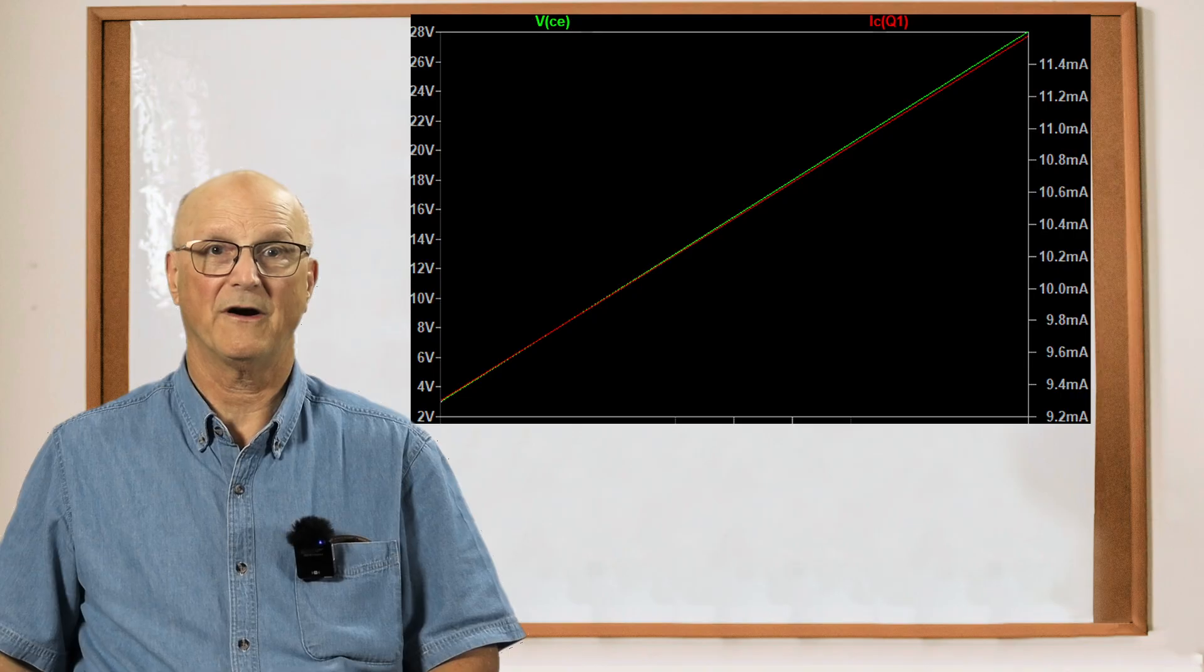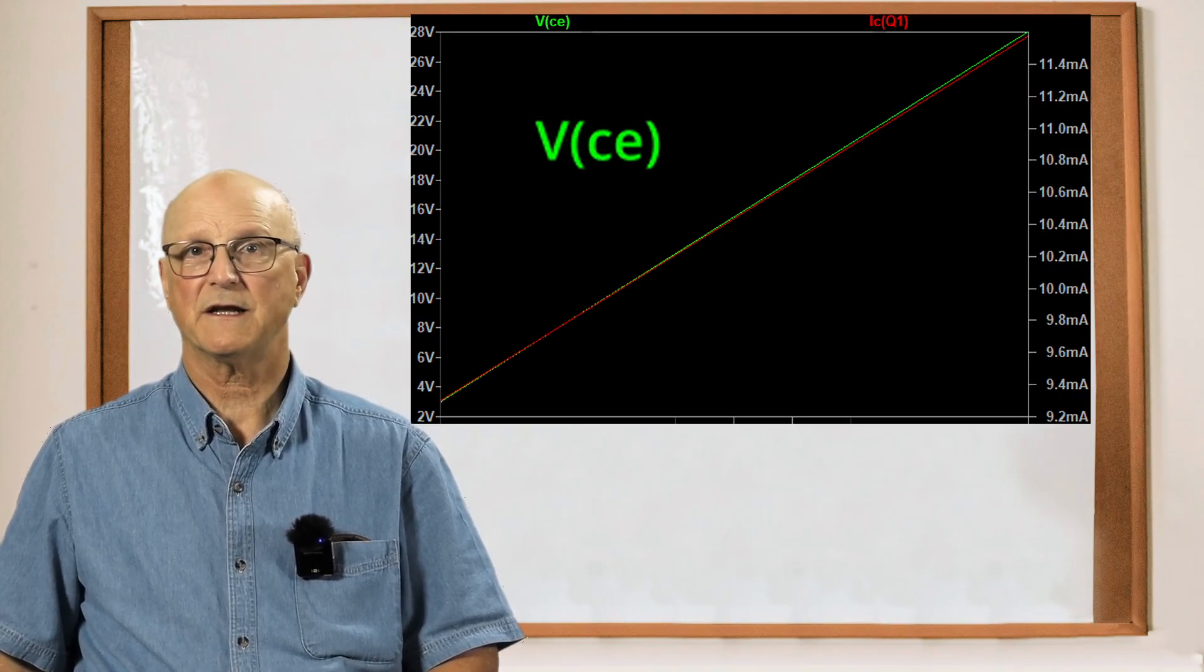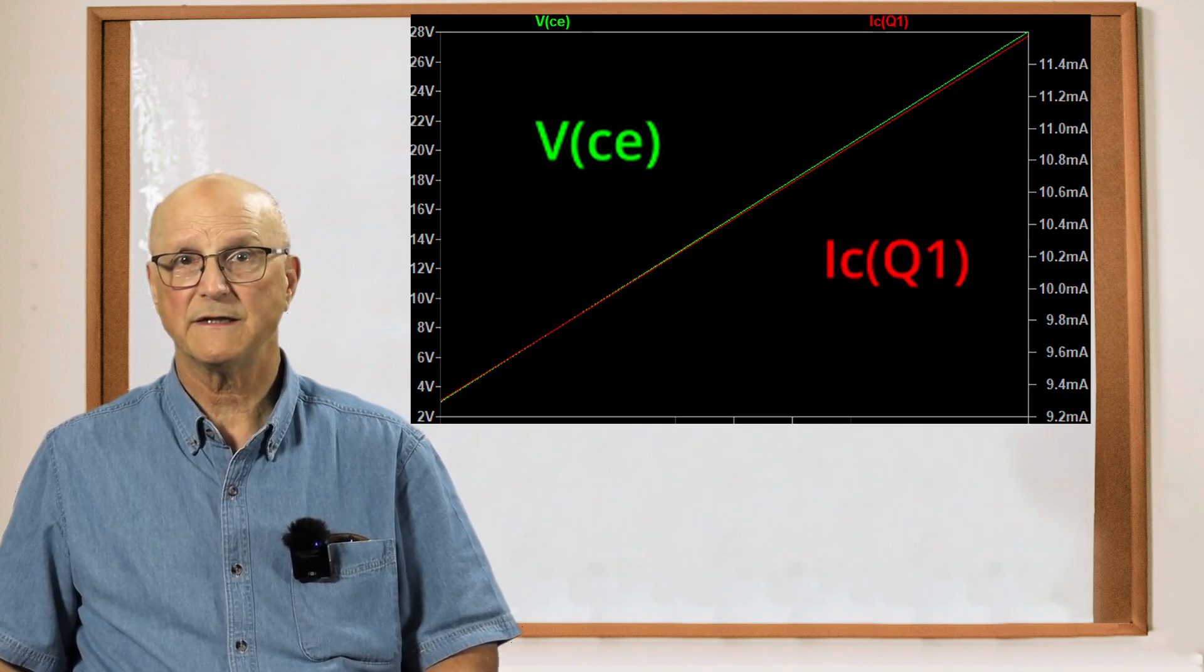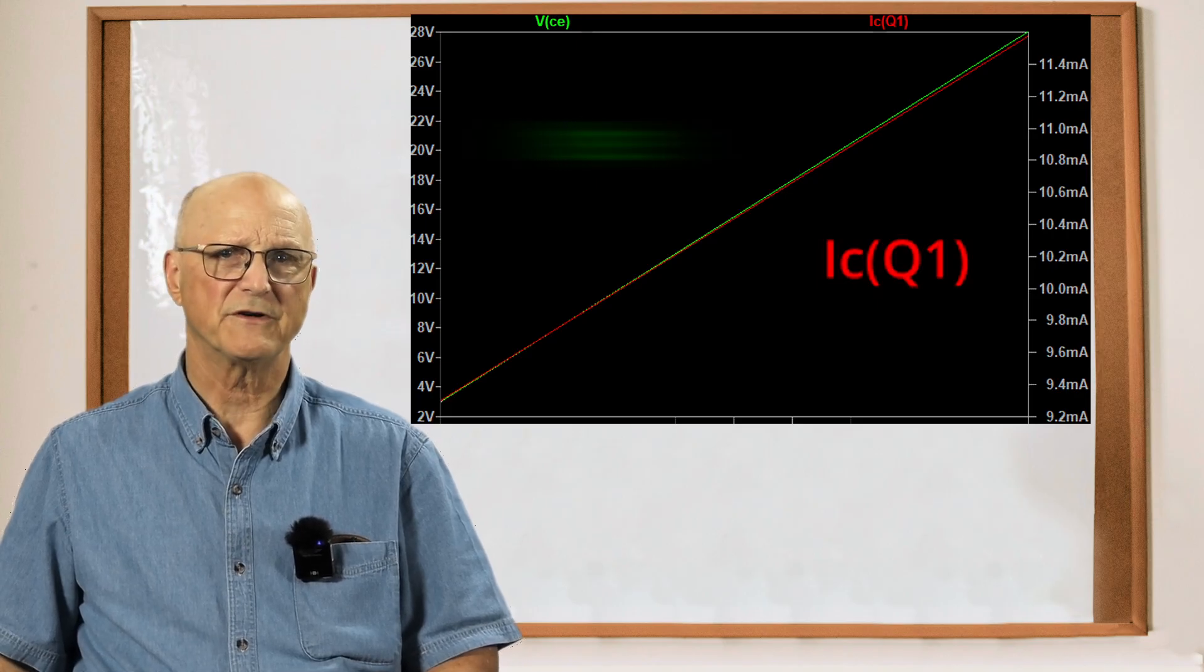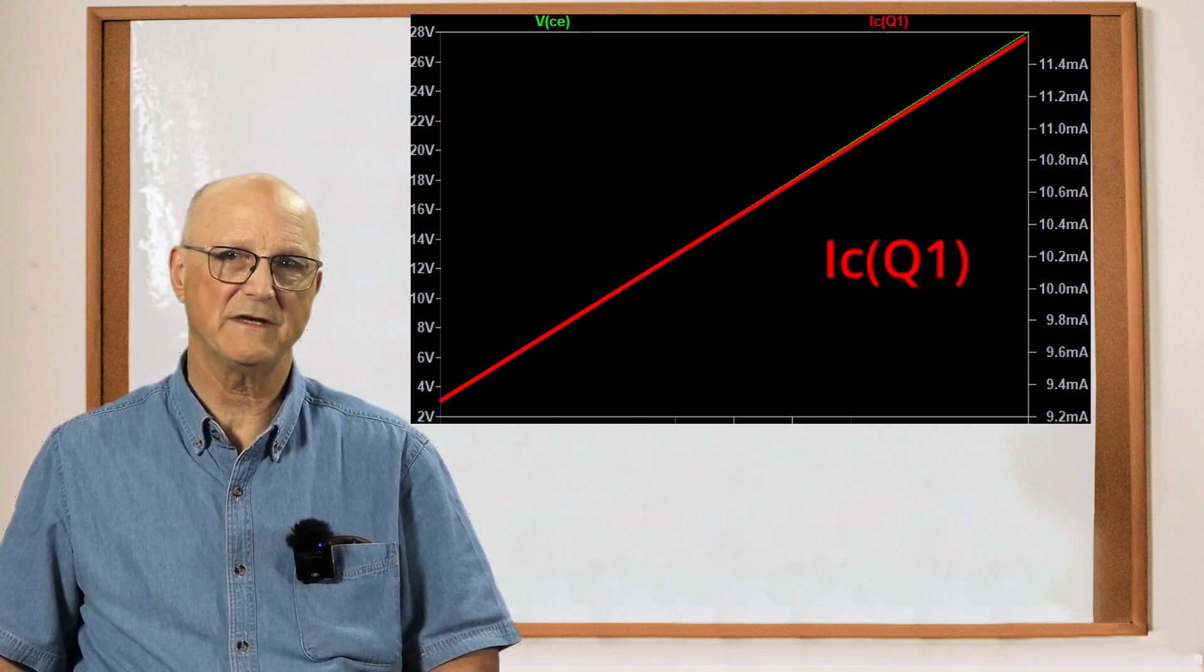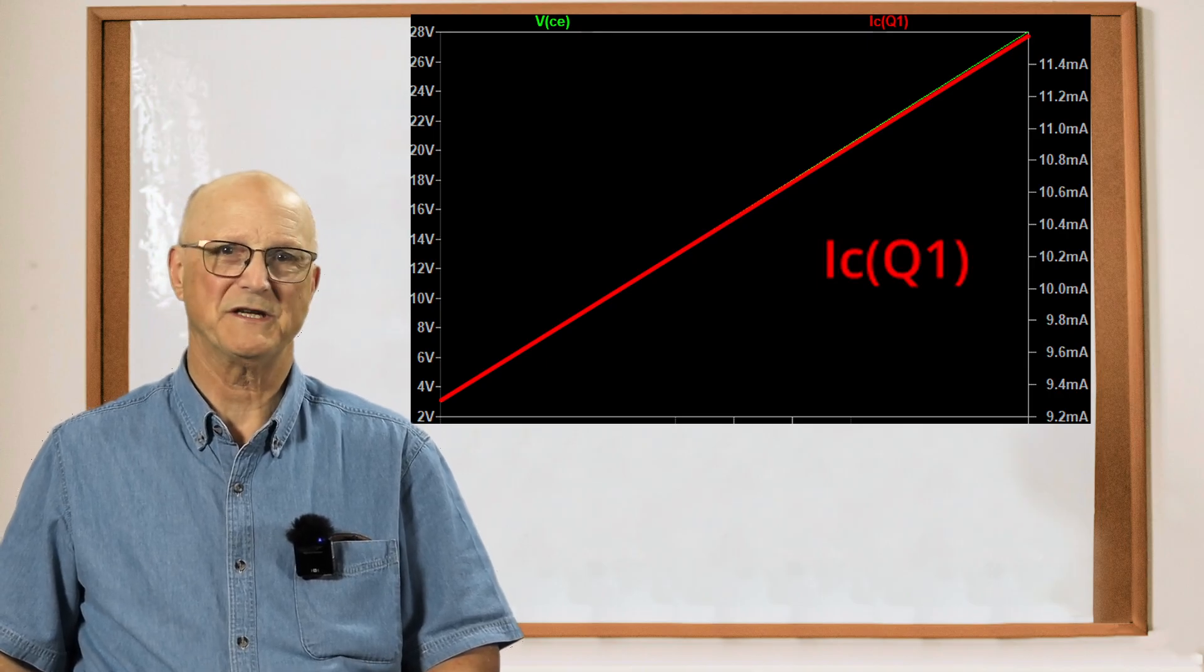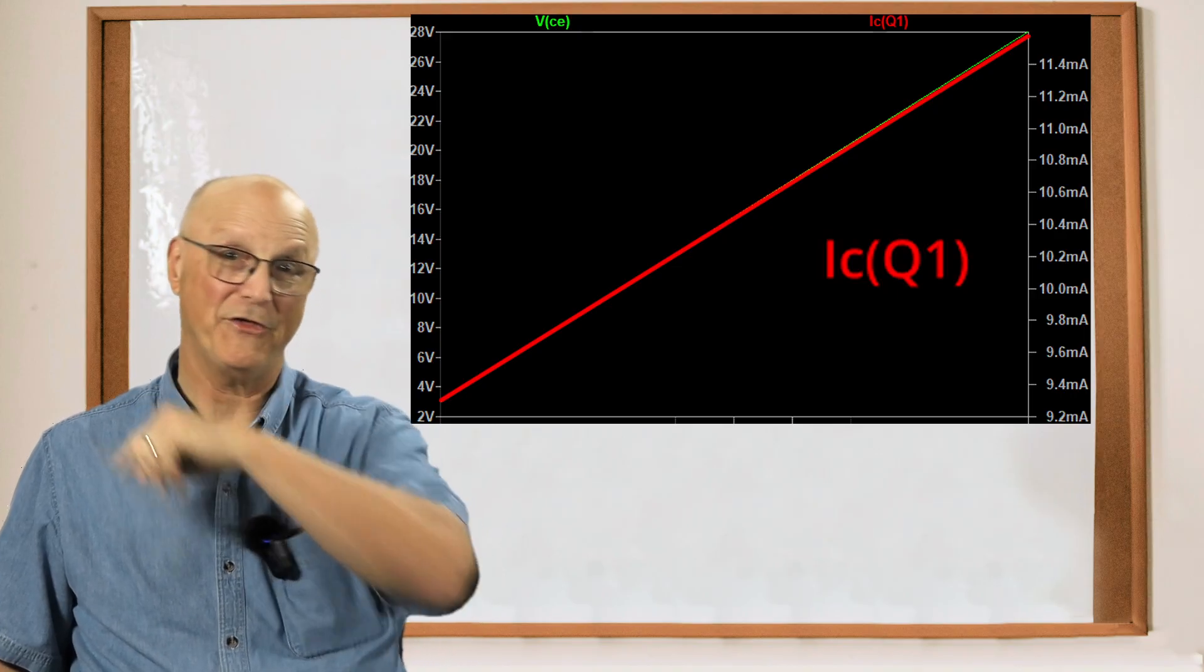And here are the simulation results. The green line is the collector emitter voltage or VCE. The red line is the collector current or IC. Notice first that the red line is not flat. It is ever increasing with VCE. So the question is, how much is it really increasing? Remember, scale is everything.